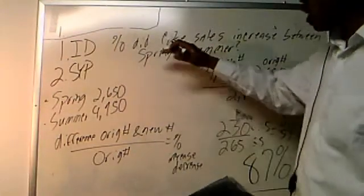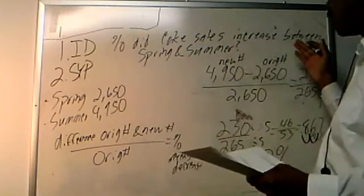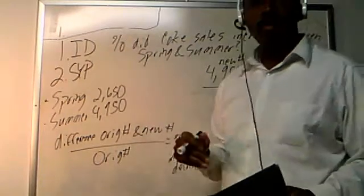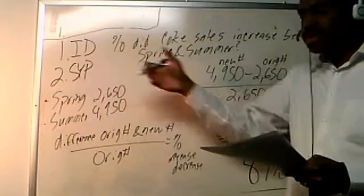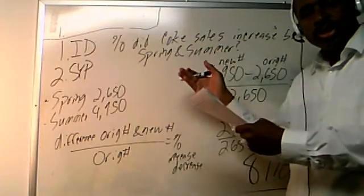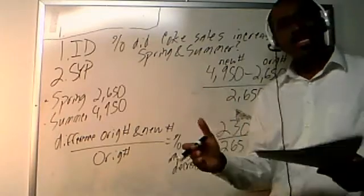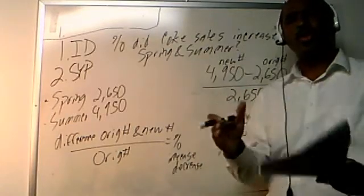We talked about what the question was. The question was all about the percent of Coke sales increase between spring and summer. And then we said, we're going to state our path. And what that simply means is, how do I get this information to get back to the question? This is where people get stuck. This is why people get that 370, that 380, that 390, even that frustrating 400, and don't grab that 410.